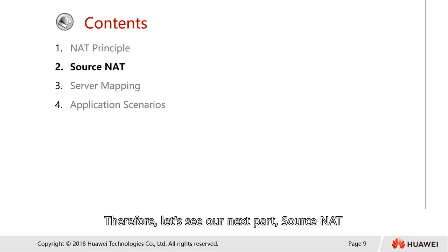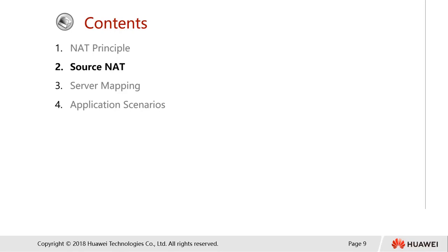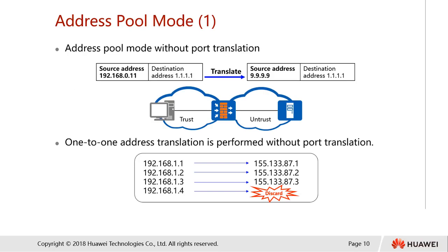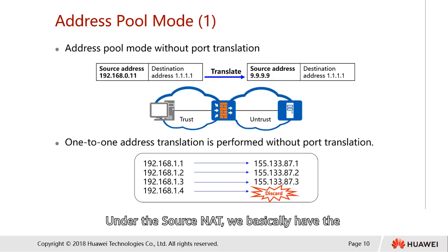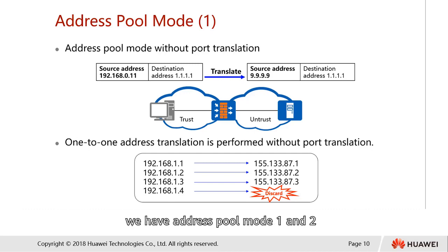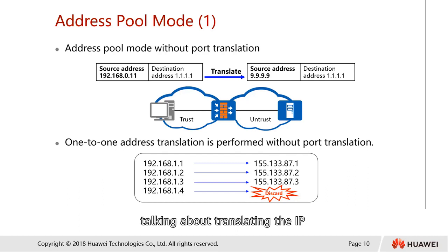Let's see our next part — the source NAT. Under the source NAT, we basically have the address pool mode. We have address pool mode number one and number two. Address pool mode one is about translating the IP without port translation.